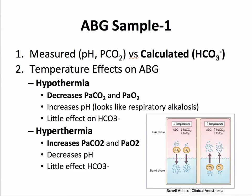Let's look at ABG sampling concepts. When you send off an arterial blood gas, the pH and the PCO2 are actually measured, whereas bicarbonate is calculated.